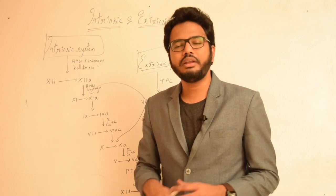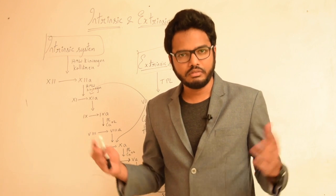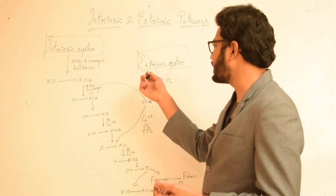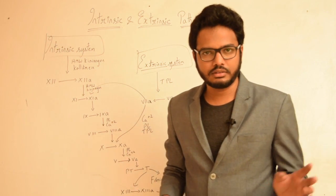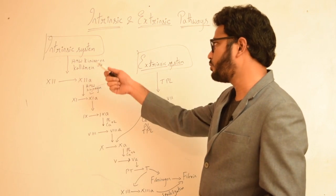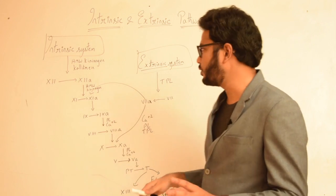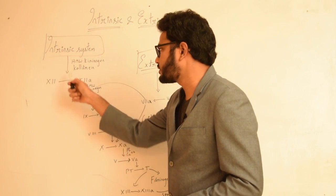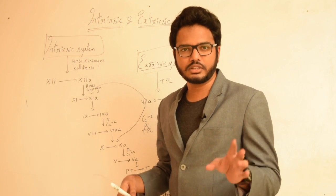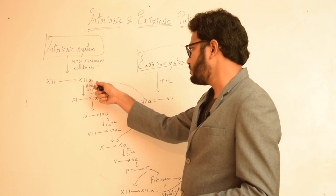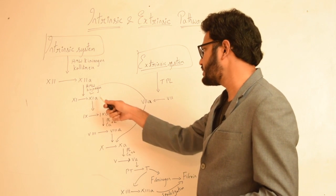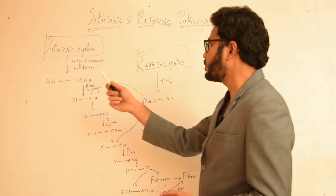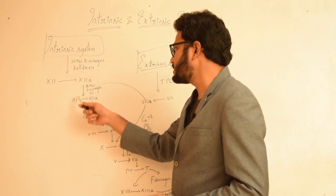Remember that whenever there is endothelial injury or cell injury inside the vessel wall, there can be activation of both intrinsic as well as extrinsic pathways. Coming to the intrinsic pathway, as you can see in the flow chart, high molecular weight kininogen and kallikrein activate factor 12. Whenever a factor is activated, it's represented as the factor number followed by small letter 'a', indicating activation.